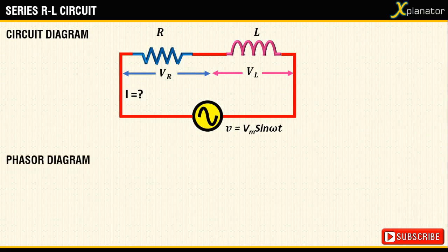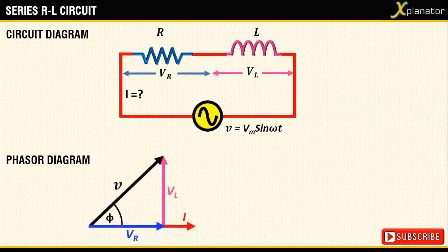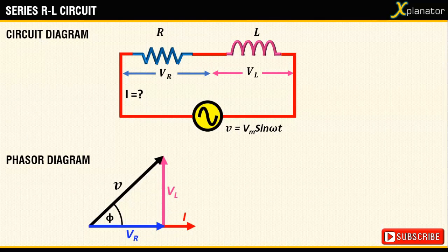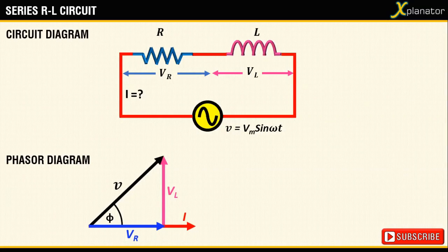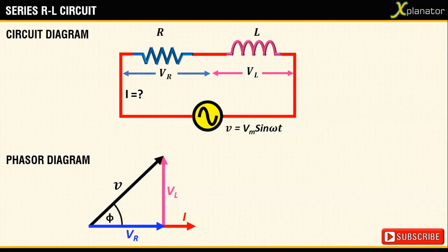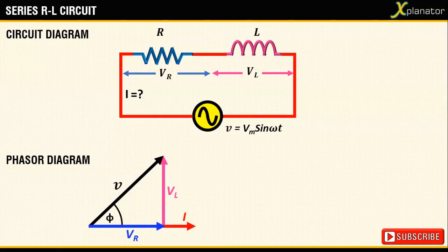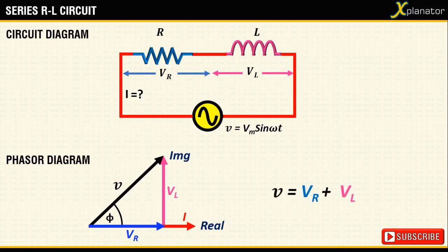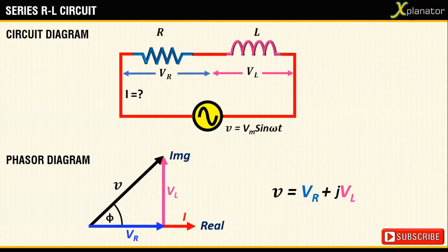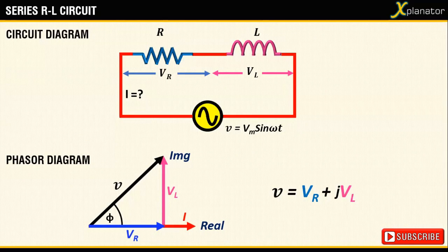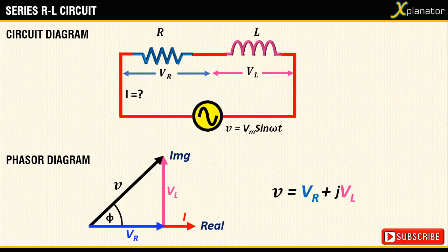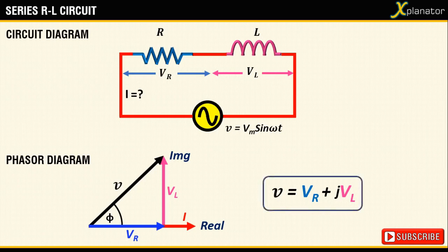The phasor diagram for a series RL circuit has already been described in my previous videos. Do check out the links for reference. Now from the diagram, we can see that the equation for voltage can be written as V equals Vr plus j times Vl. To find the magnitude of this voltage, using Pythagoras theorem in the right-handed triangle, you get V squared equals Vr squared plus Vl squared.